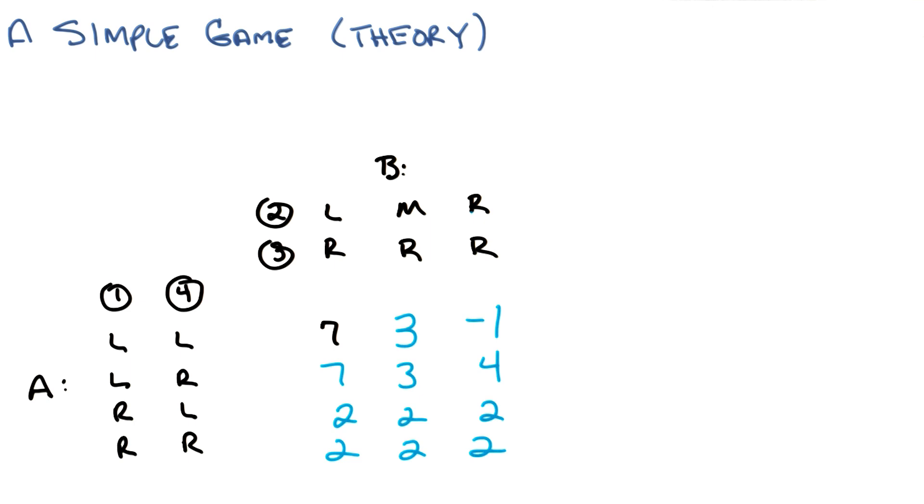But A can't choose the upper left corner. Why? A can only choose a strategy. B gets to choose its own strategy. I see. So, A is choosing the row and then B gets to choose the column. So, then B should choose that also because that's what A wants.